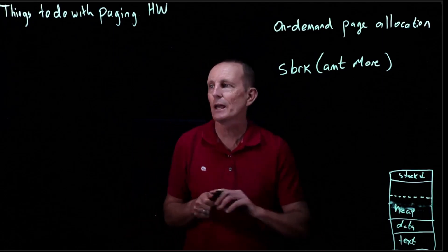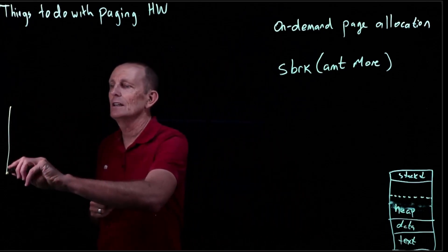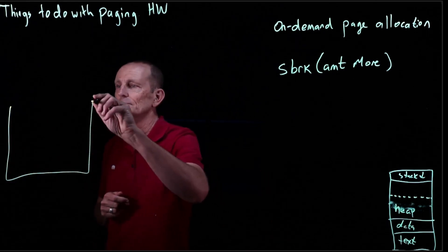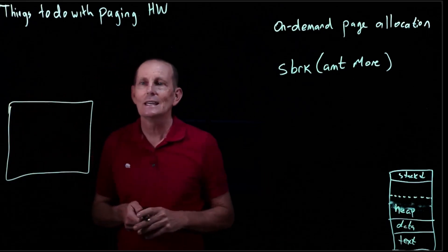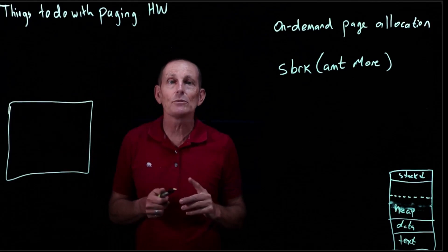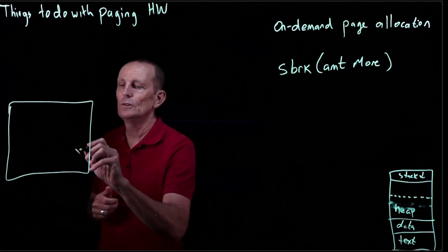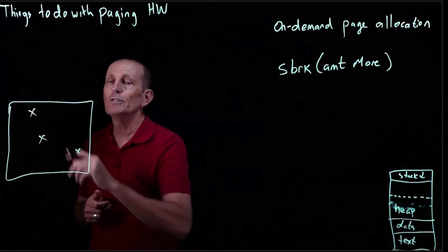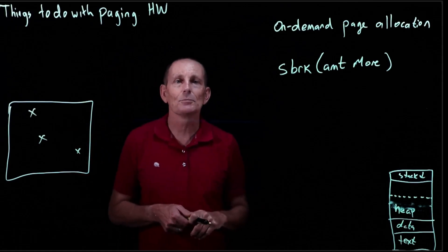that the process is allocating a sparse array. So it's allocating a big array, and it turns out it's going to only use a few parts of the array.